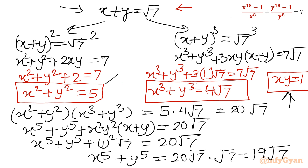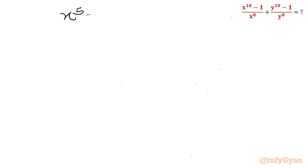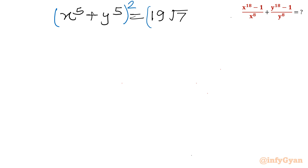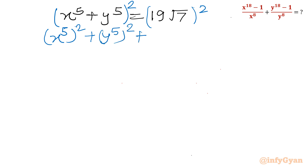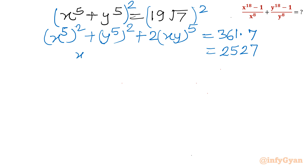Remember x² + y² = 5; we will use this for the x^8 + y^8 calculation. Now squaring x^5 + y^5 = 19√7: (x^5 + y^5)² = (19√7)². Expanding: x^10 + y^10 + 2x^5y^5 = 361 × 7 = 2527. Since (xy)^5 = 1, we have x^10 + y^10 + 2 = 2527, so x^10 + y^10 = 2525.